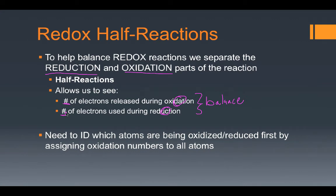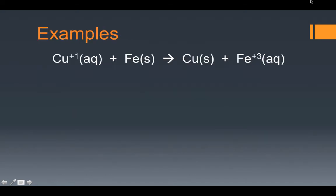To do this, however, we need to be able to identify what elements are being oxidized and what elements are being reduced by first assigning oxidation numbers to all individual atoms. So instead of talking about this hypothetically, the best way to explain this process of writing oxidation and reduction half reactions is simply to give it a try. What we're going to do with this particular reaction is start by assigning oxidation numbers.